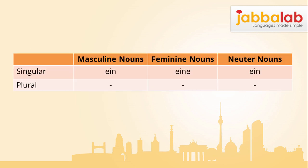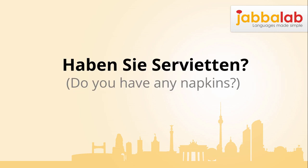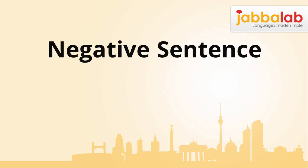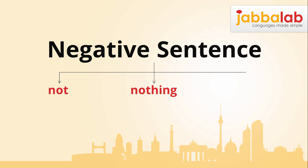Note that there is no plural form of the indefinite article in the German language. For example: 'Haben Sie Servietten?' Now that you've familiarized yourself with the indefinite article, let's have a look at the indefinite article in a negative sentence. A negative sentence uses a word such as 'not', 'nothing', or 'never' to express that something is not happening.